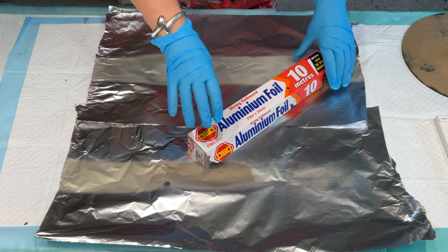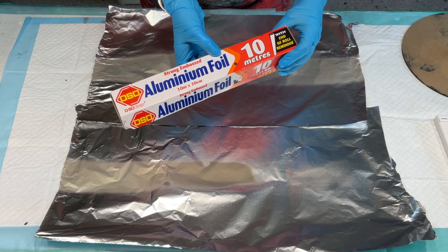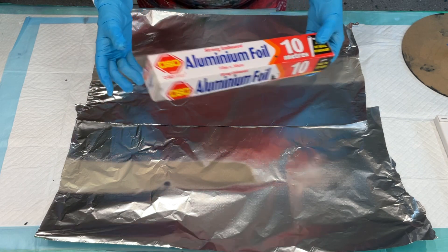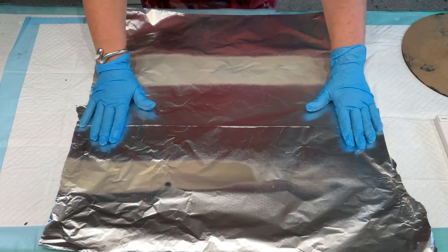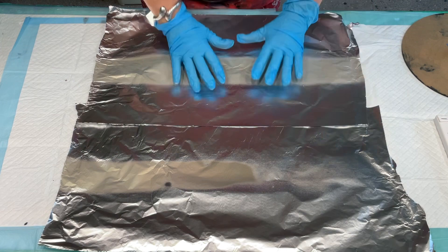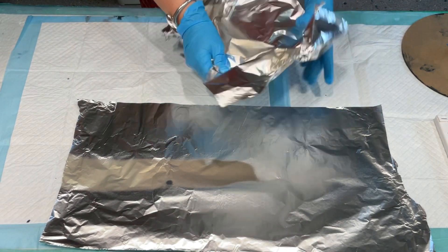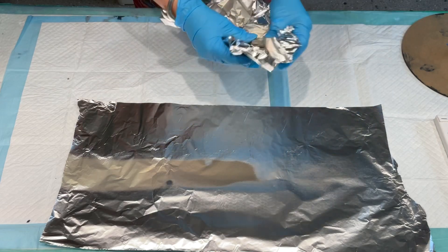In Australia we call it aluminum foil, not sure what you call it all over the world. I'm starting off putting my aluminum foil down where my canvas is going to go. I do want to scrunch this aluminum up a bit so I get some texture on the canvas when I come to dip on it.